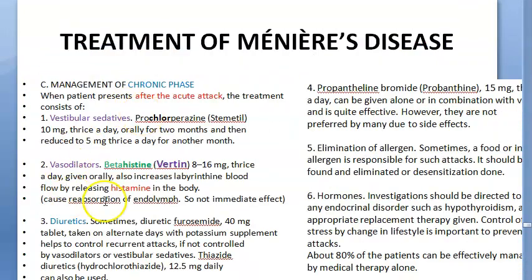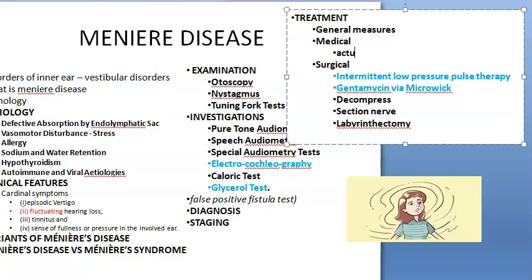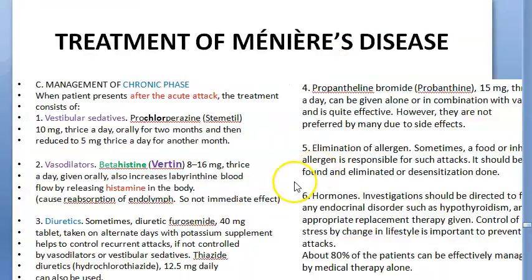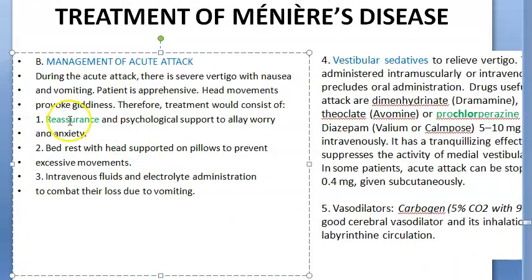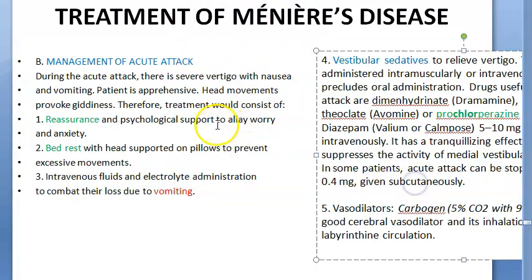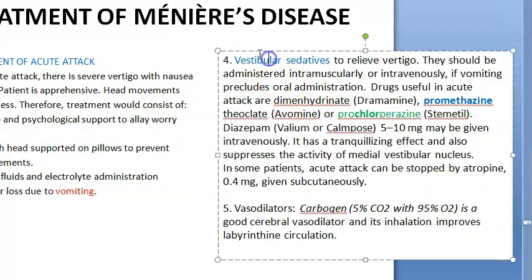For medical management there are two phases: acute attack and chronic phase. In the acute attack: reassurance and bed rest. Give intravenous fluids and electrolytes to combat losses from vomiting — even though these patients are usually told to take less water, during an acute attack with vomiting you give intravenous fluids.